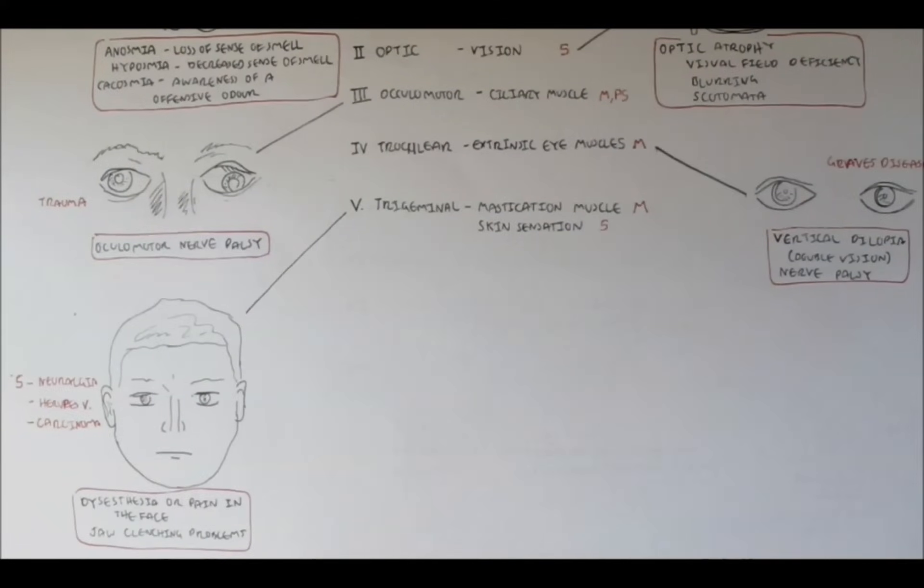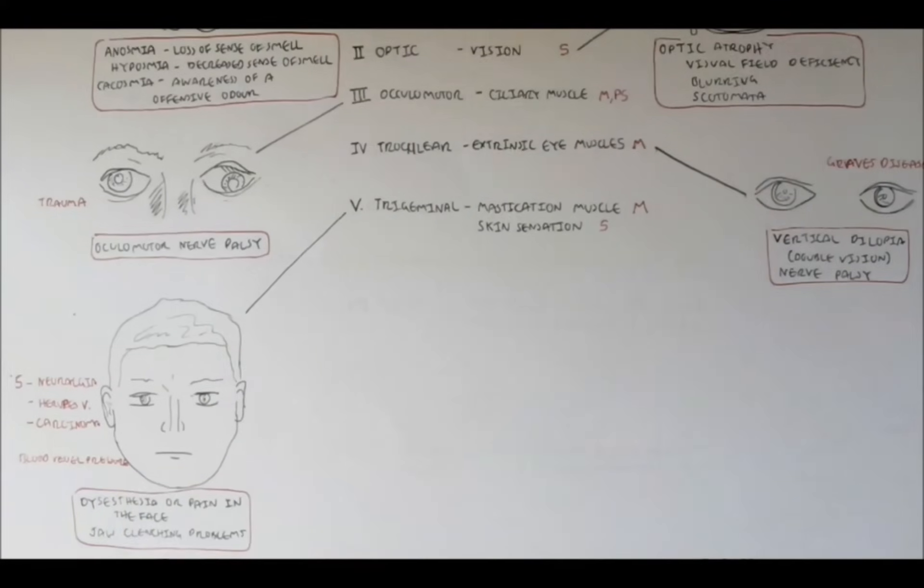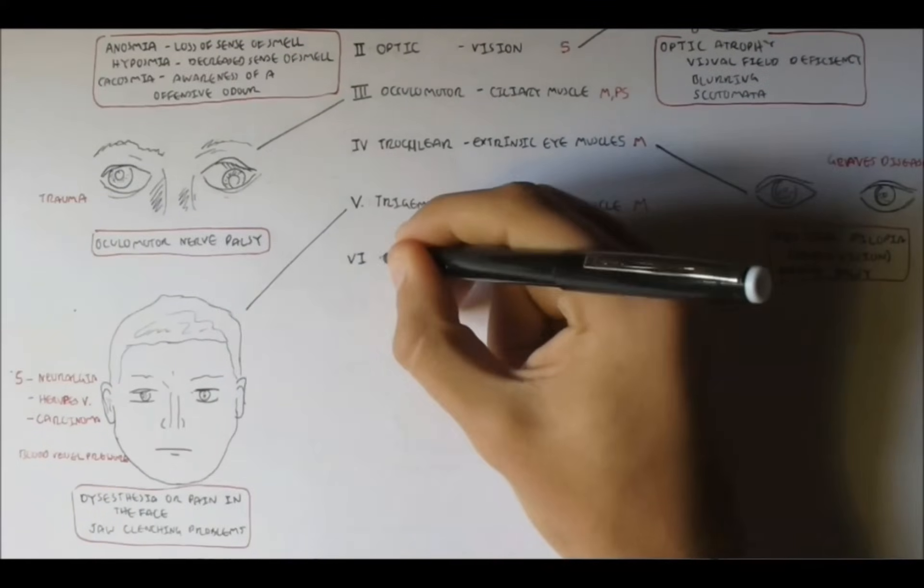Now, damage to this nerve, the potential causes for the sensory part of the nerve can be from neuralgia, which is a herpes virus, or even carcinoma. This can also be said to damage the motor aspect of this nerve. The causes and symptoms can also be due to compression of the nerves by surrounding blood vessels. And this can also be said for damage to other cranial nerves as well.